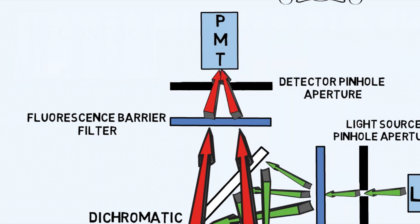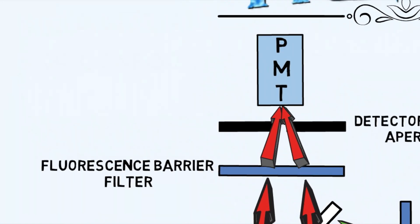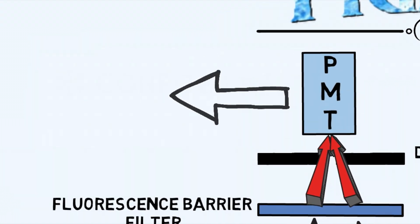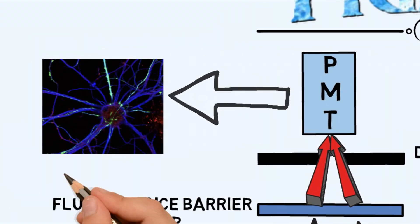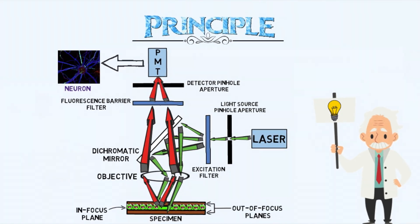Light originating from an in-focus plane freely passes the detector pinhole aperture, whereas light coming from out-of-focus planes is largely blocked by the pinhole, not letting it reach the detector. This helps create a sharp image of a specific portion of the specimen being examined. The target region of the specimen is scanned point by point, and then an image is produced pixel by pixel.